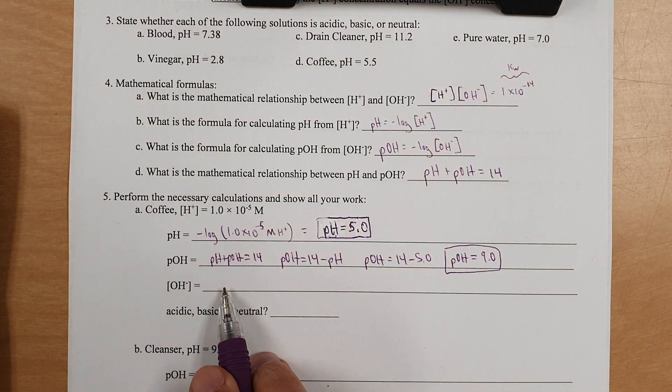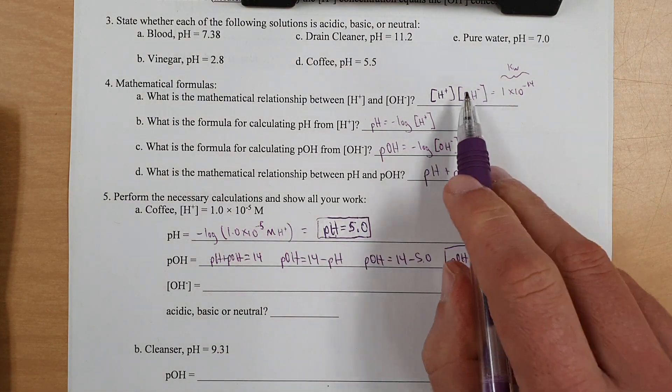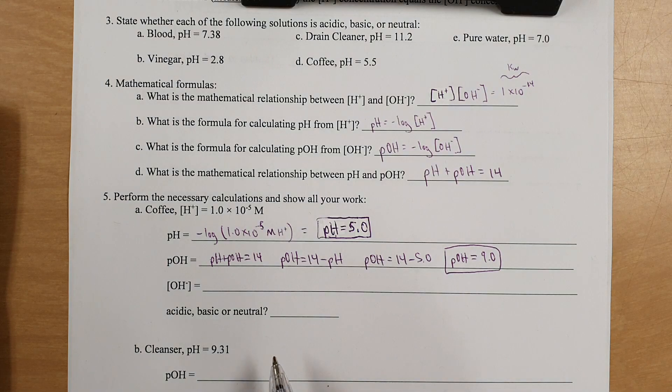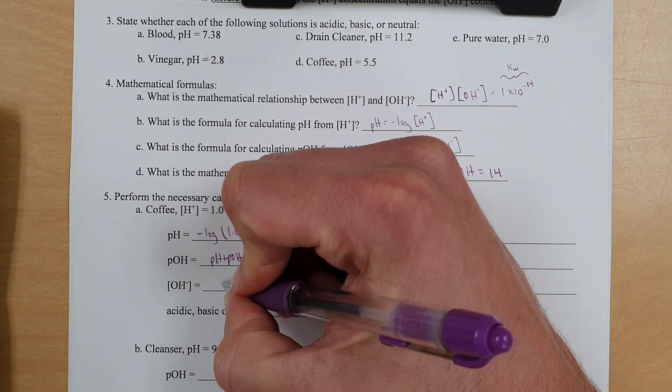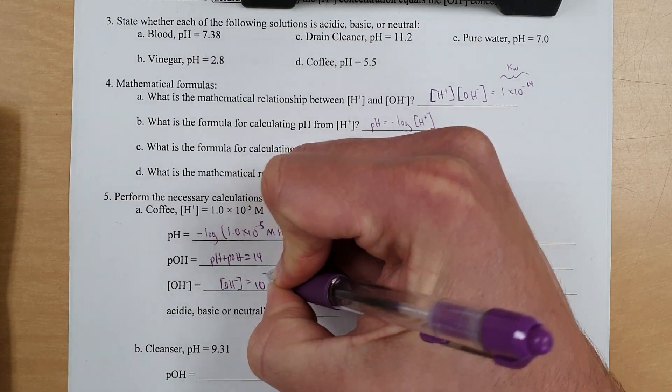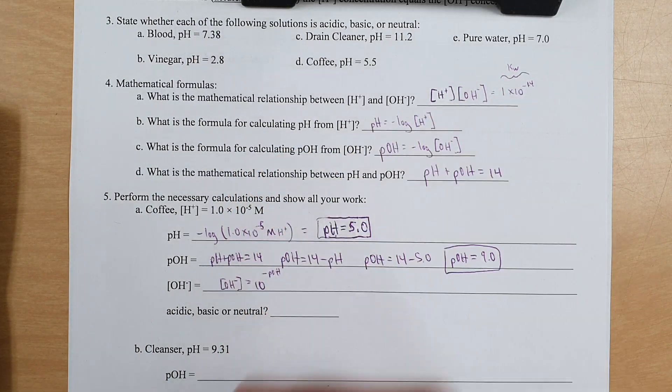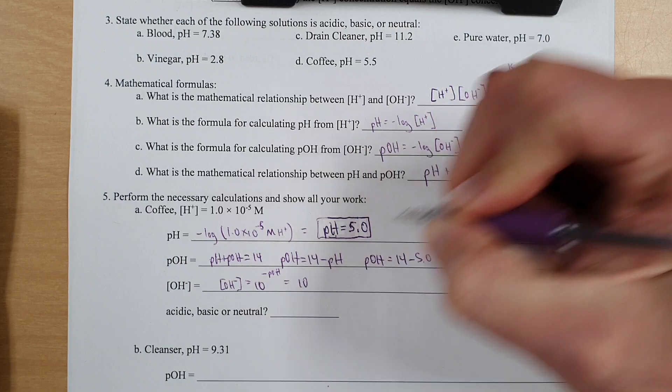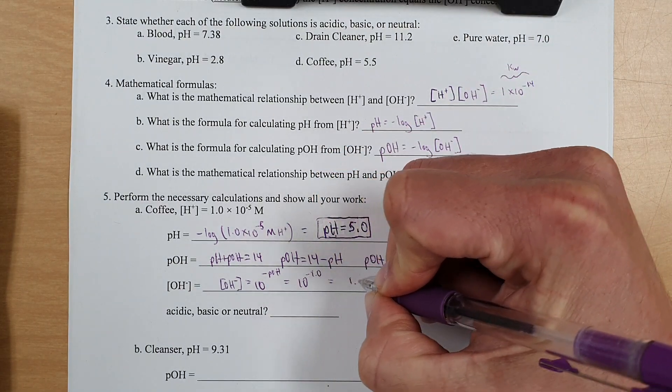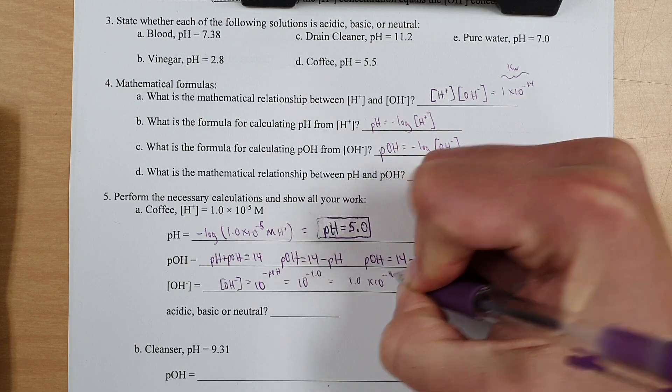Then, for this one, you've got, again, you've got two ways of doing it. You could use this to get this answer. Or there is another way you could go about doing it. You could do hydroxide ion concentration equals 10 to the negative pOH, which means 10 to the negative 9.0, which means 1.0 times 10 to the negative ninth power.